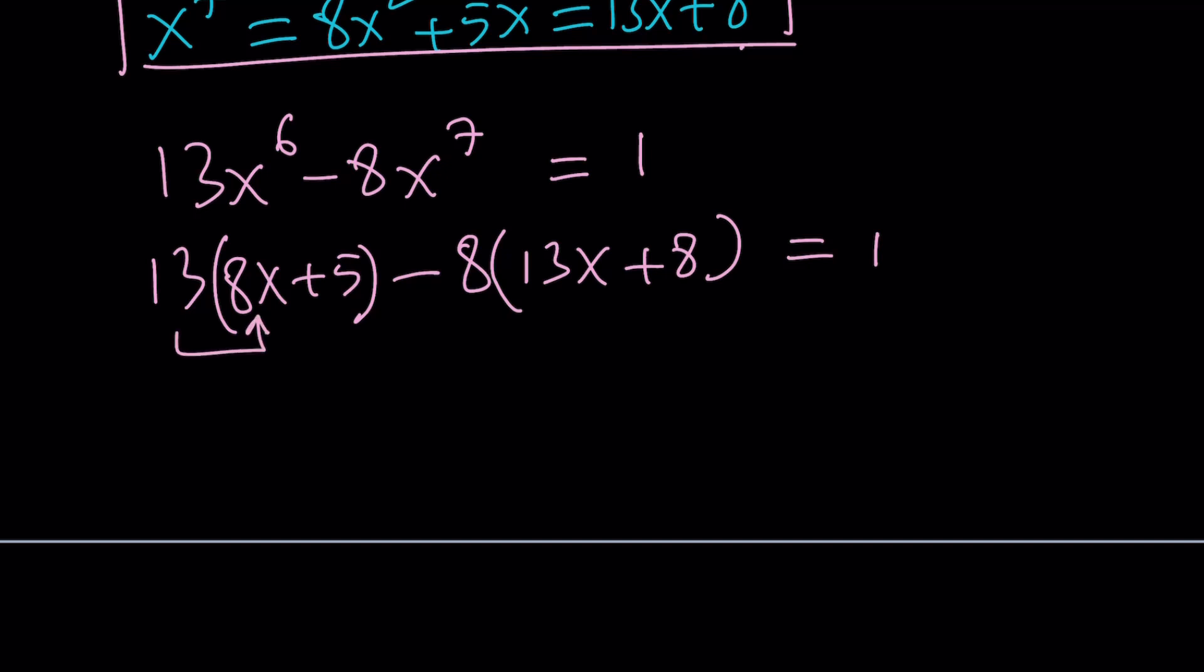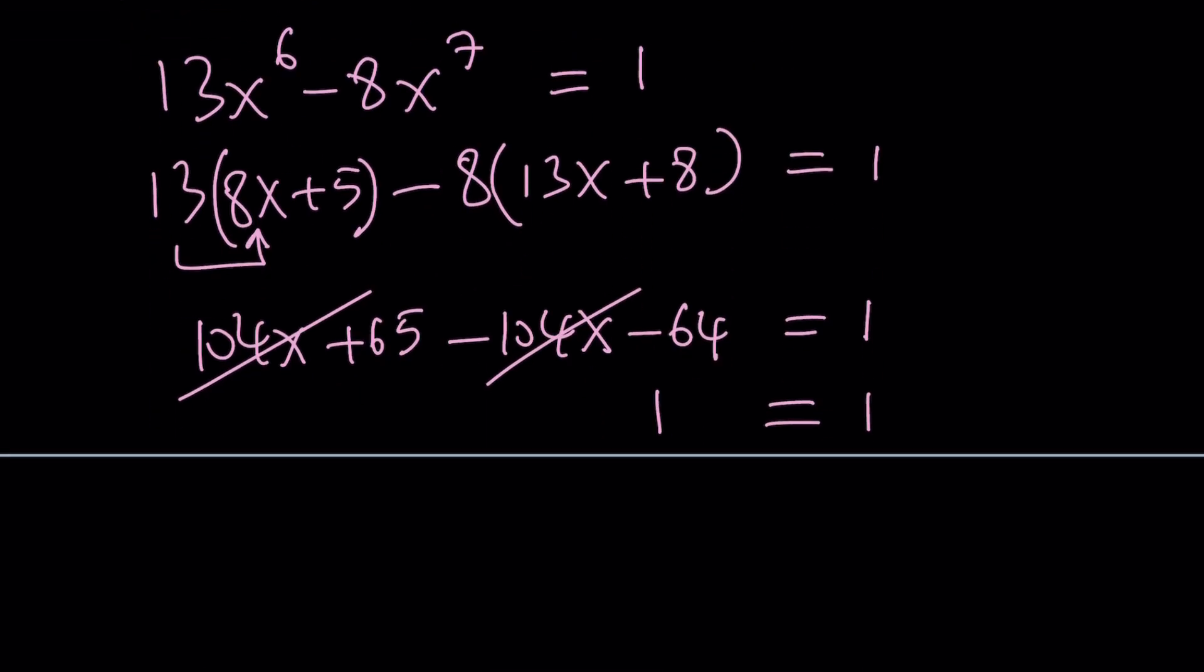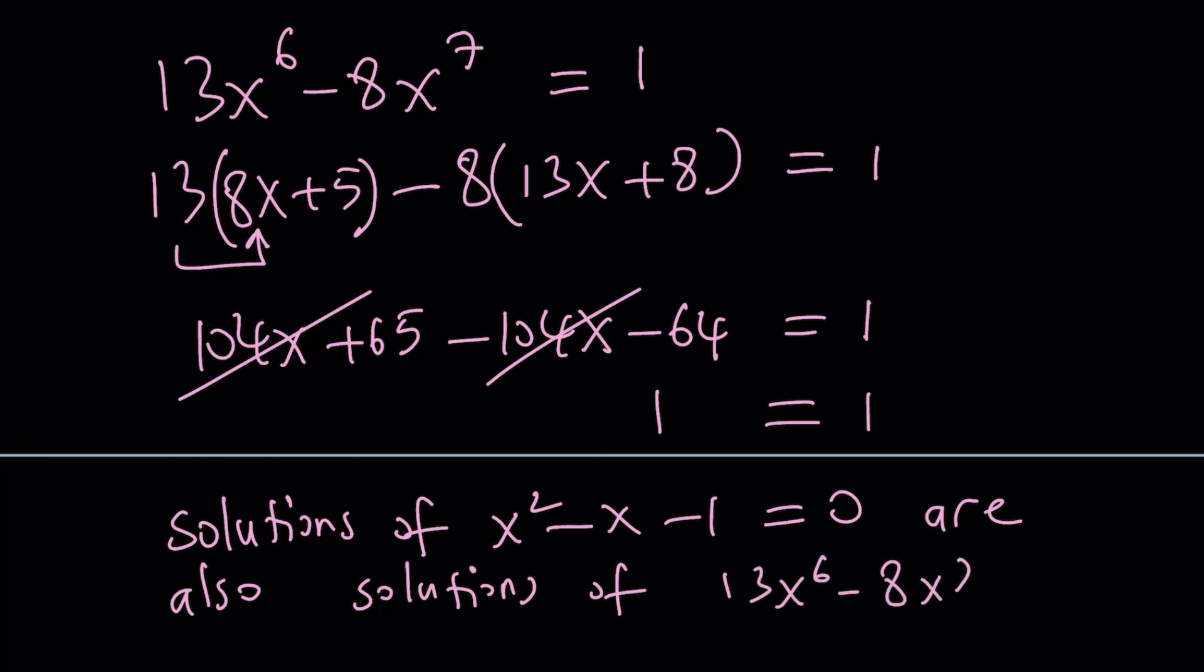But, 13 times 8 is 104. This is 104x plus 65 minus 104x. Uh-oh. Minus 64 equals 1. 104x cancels out, leaving us with no x. And, we get 1 equals 1. Of course, this is always true. What does that mean? It means that whatever made x squared equal to x plus 1 also makes this equation true. In other words, solutions of x squared minus x minus 1 equals 0 are also solutions of 13x to the 6th minus 8x to the 7th plus 1 equals 0.